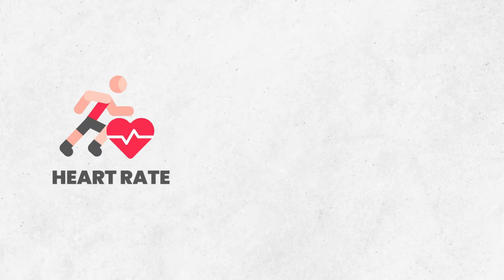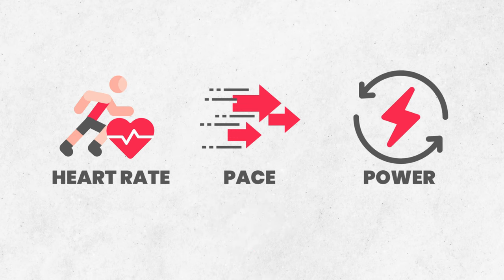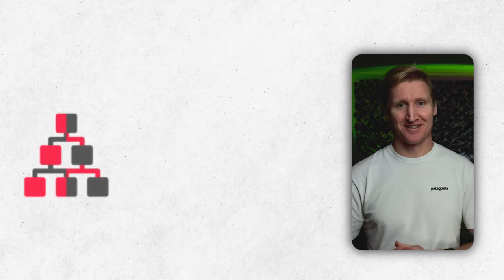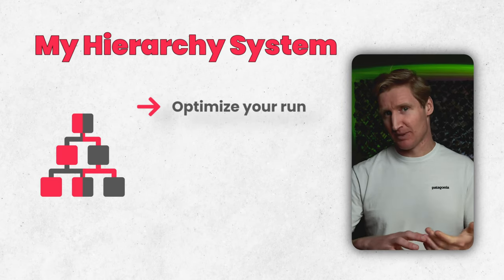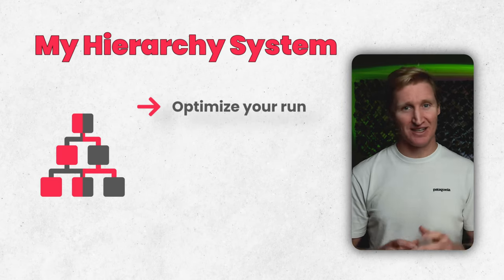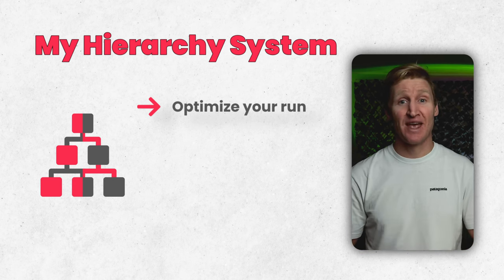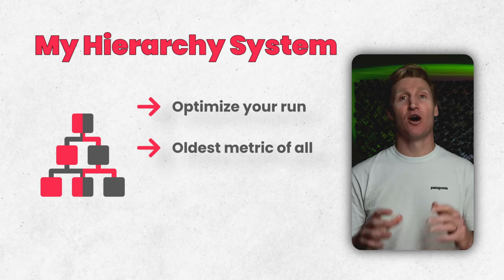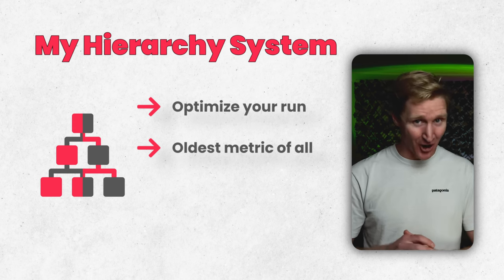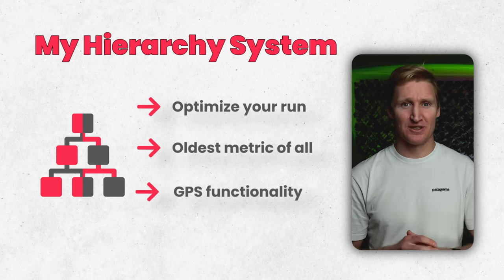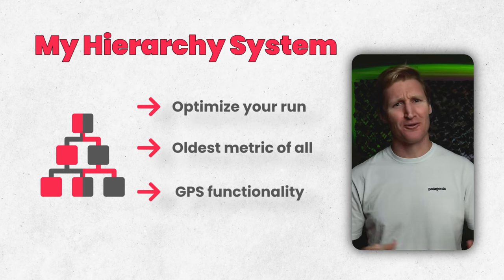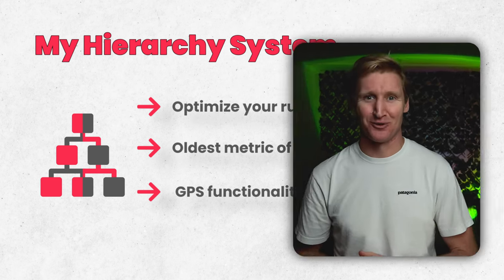Hey, welcome back. In this video I'm breaking down my hierarchy system for leveraging heart rate, pace, and power. Despite what the experts have told you, you can't just rely on one metric. With my hierarchy system I'll show you how you can use heart rate, pace, and power to optimize every run and race, to ensure you're not throwing away precious training time. As a bonus, I'll show you how I use the oldest old-school metric — climb — along with the newest GPS functionality that pretty much no one knows about, to smash track workouts.